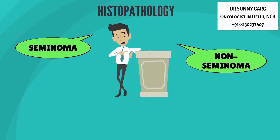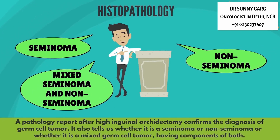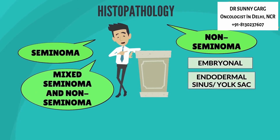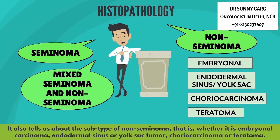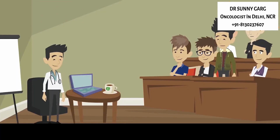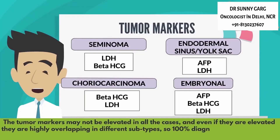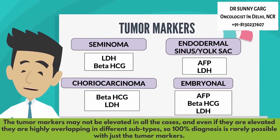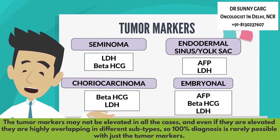A pathology report after high inguinal orchidectomy confirms the diagnosis of germ cell tumor. It also tells us whether it is a seminoma or a non-seminoma, or whether it is a mixed germ cell tumor. It also tells us about the subtype of non-seminoma. Tumor markers could help to differentiate the various subtypes, but they may not be elevated in all cases and are highly overlapping in different subtypes. So 100% diagnosis is rarely possible with just the tumor markers.